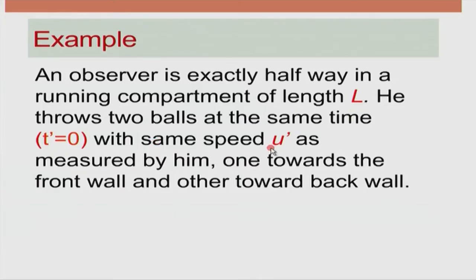The person has a watch and finds that he throws two balls simultaneously — one in the direction of motion of the train with respect to earth, and another in the opposite direction. The speed is the same as measured by him, which I am calling u prime. An observer is exactly halfway in a running compartment of length L. He throws two balls at the same time, t prime equals 0, with the same speed u prime as measured by him.